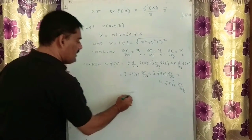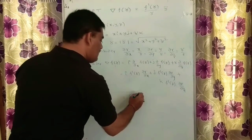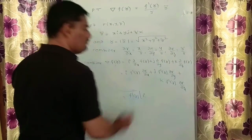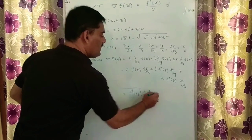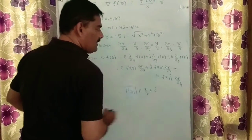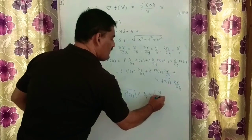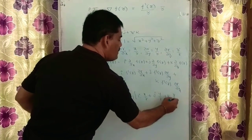Just taking f dash of r as common throughout, we are getting i into dou r by dou x. We know its value is x by r, plus j into y by r, plus k into z by r.